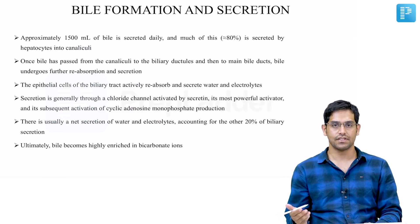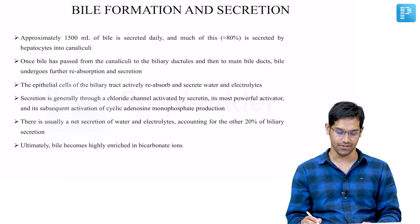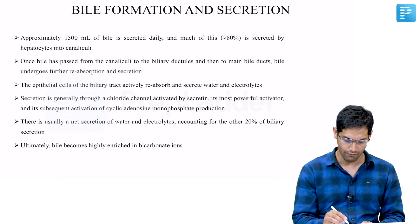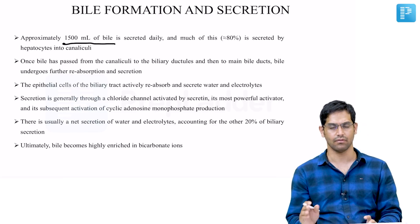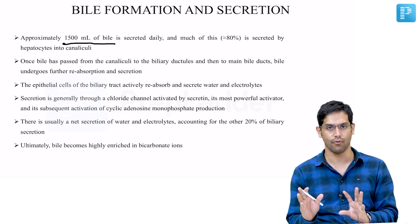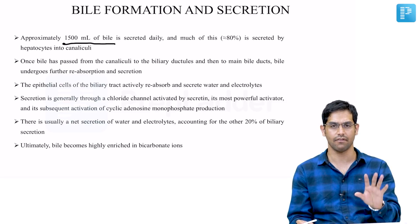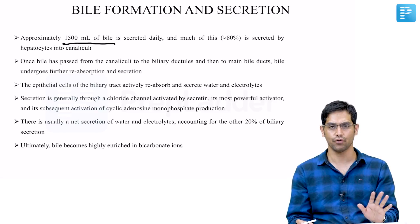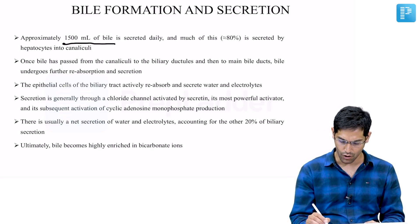Coming to the physiology of bile formation and secretion: approximately around 1.5 liters of bile is secreted daily. Questions might be asked on this, so it's around 1 to 1.5 liters — different experts can cite it differently. On an average, take it to around 1.2 to 1.5 liters. Around 80 percent of this is secreted by the hepatocytes into the canaliculi.